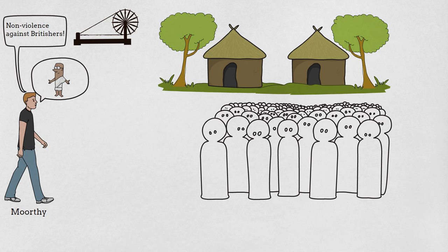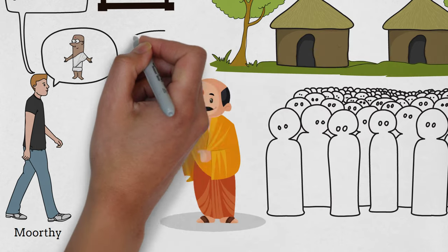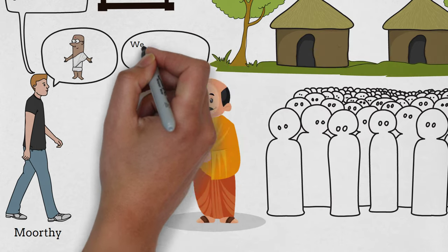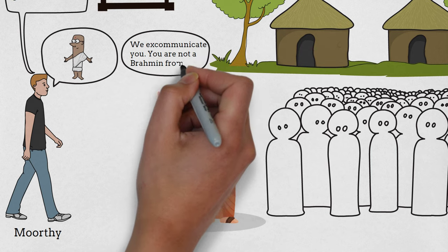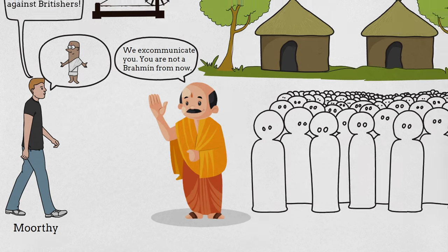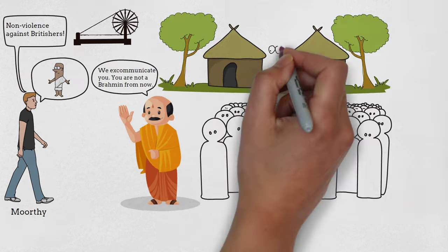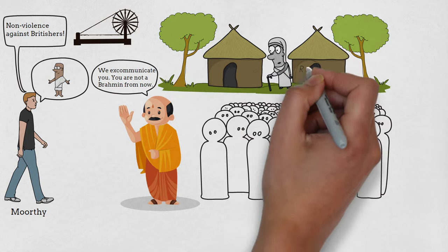Everything is going well, but the village priest does not like Moorthy's protest about the caste system and excommunicates him. Moorthy is a Brahmin, so this is very shameful. When the news reaches Moorthy's mother, she goes into shock and, unable to digest it, she passes away.